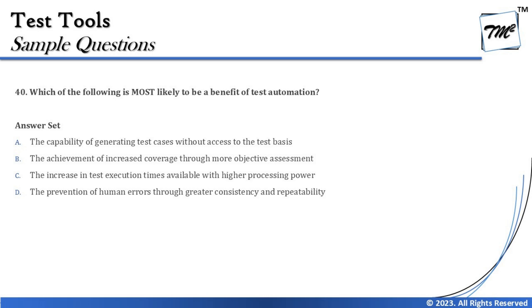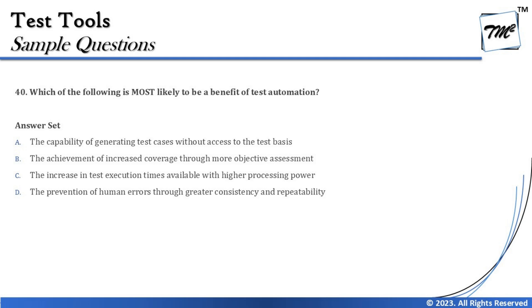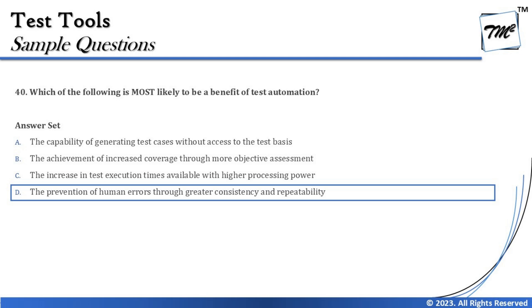Option D says: the prevention of human error through greater consistency and repeatability. This is taken directly from the ISTQB syllabus. A tool gives you greater consistency and repeatability — you can run the same test multiple times and get the same results. When humans execute the same test repeatedly, they may have different perceptions and thus different results. Therefore, the correct answer for question 40 is D — prevention of human errors through greater consistency and repeatability.